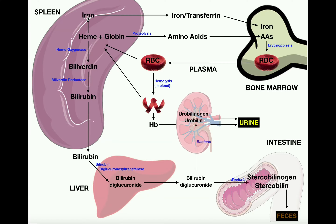Let's look at the iron first. The iron will simply be packaged with a protein called transferrin, and it will be moved in the blood ultimately back to the red bone marrow. Now there are other tissues that are going to use iron for different purposes, and transferrin can take iron to those tissues as well. But since we need to make more red blood cells in the red bone marrow, some of that transferrin is going to take some iron back to the bone marrow so we can manufacture more red blood cells to replace the ones that were just destroyed.